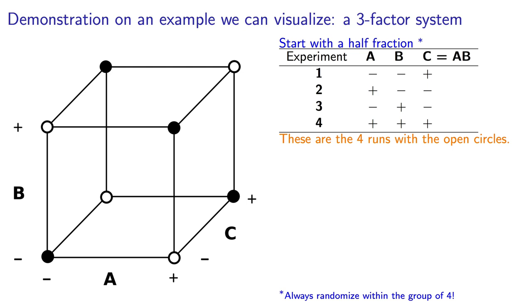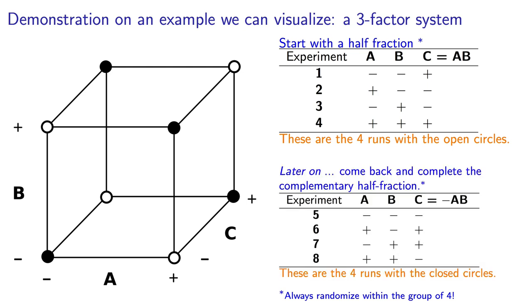Recall, we would use a Pareto plot for this. Then, let's say things looked promising, or there was too much confounding and you wanted to clear things up. Then we would get approval to do the other half fraction, and come back and do the runs with closed circles.